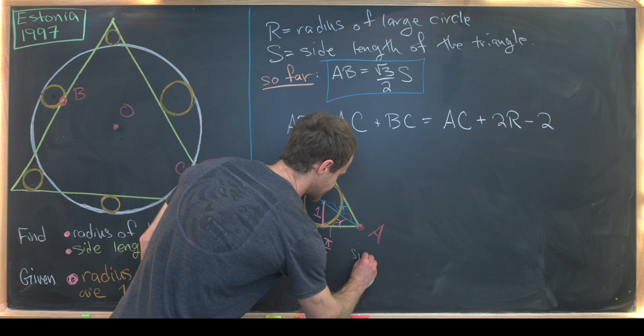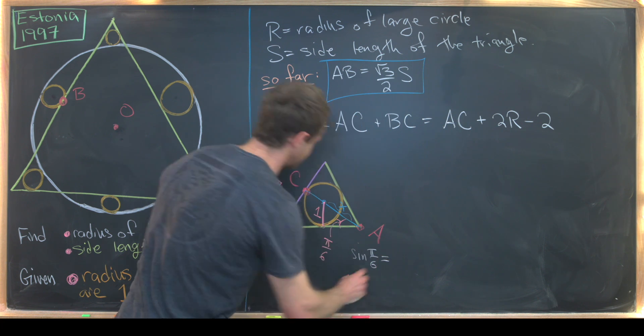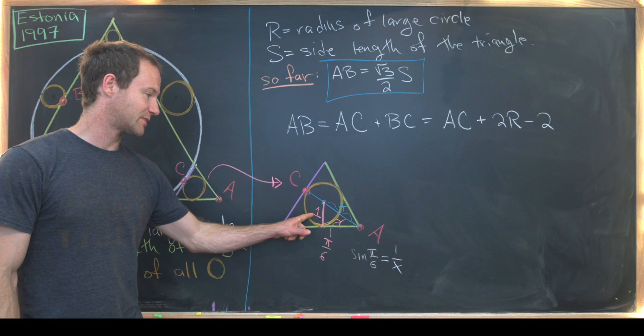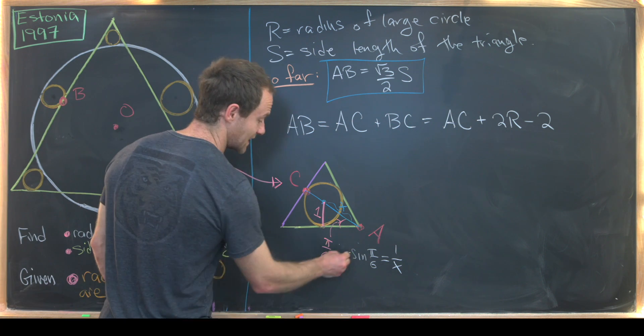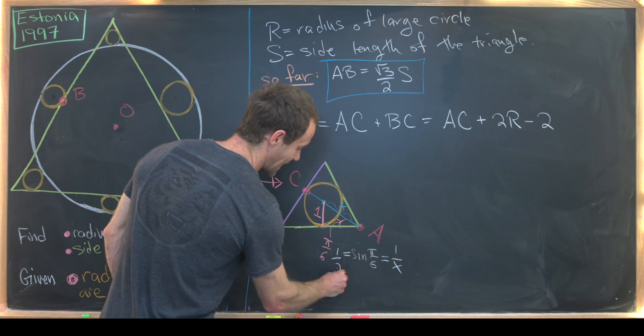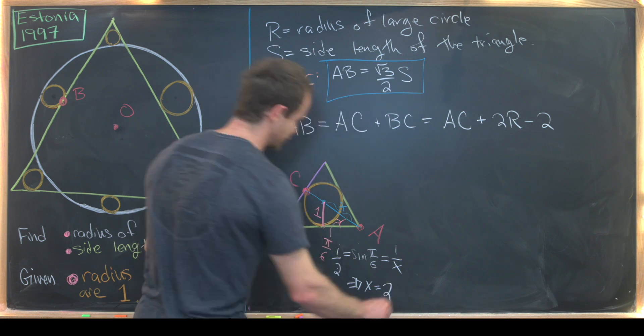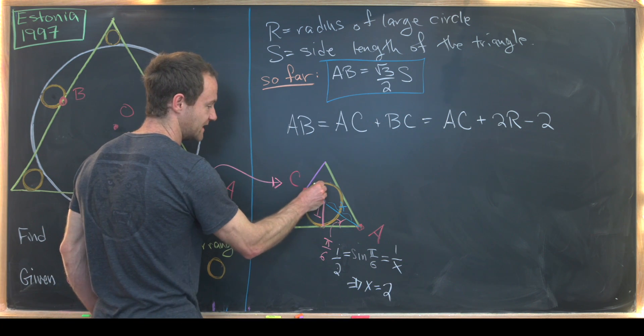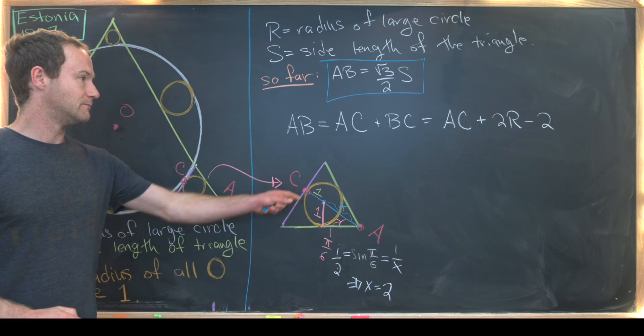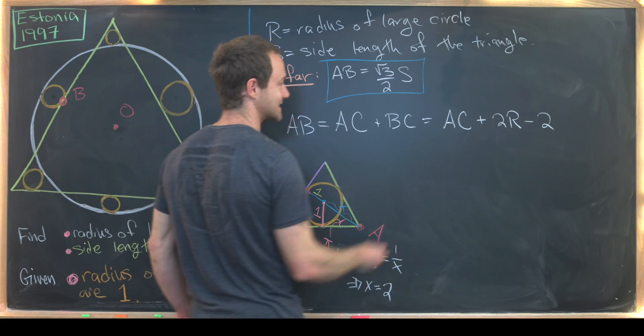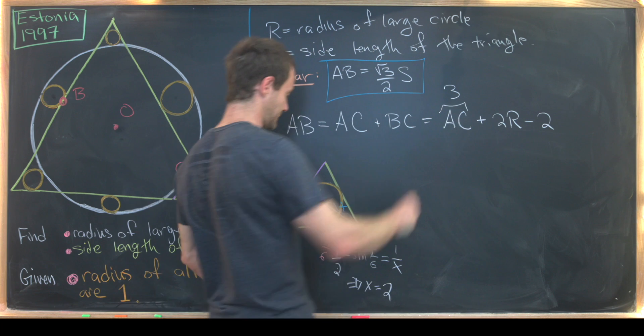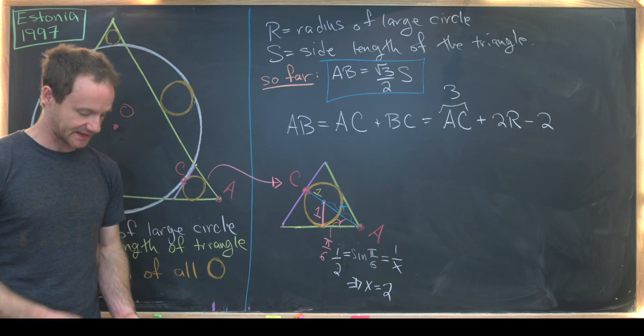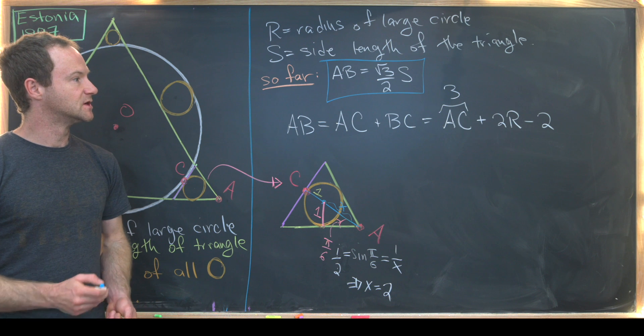But sine π over six is equal to a half, which means X is equal to two. But again, we know that this is another radius of the circle, meaning that AC has length three, because we've got two from this value of X plus one from this extra radius of the circle.